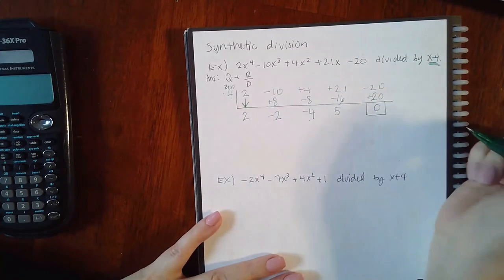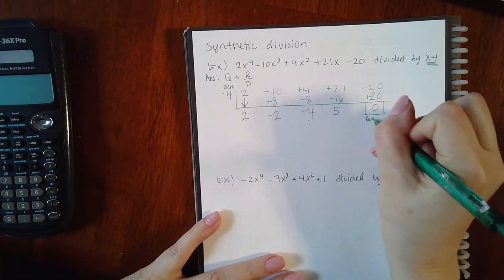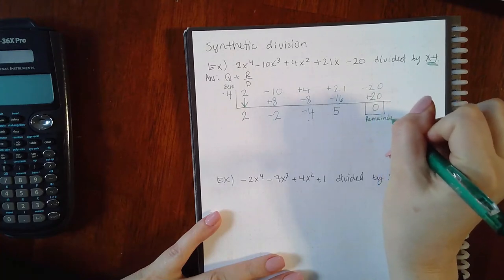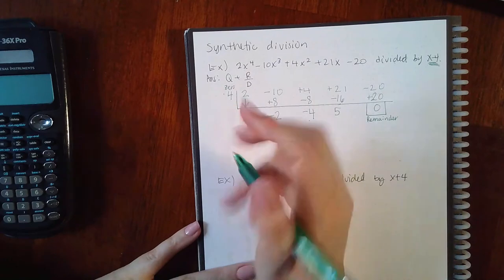This last number I like to box. Always box your last number. This is your remainder. Then the factor that you divided by...